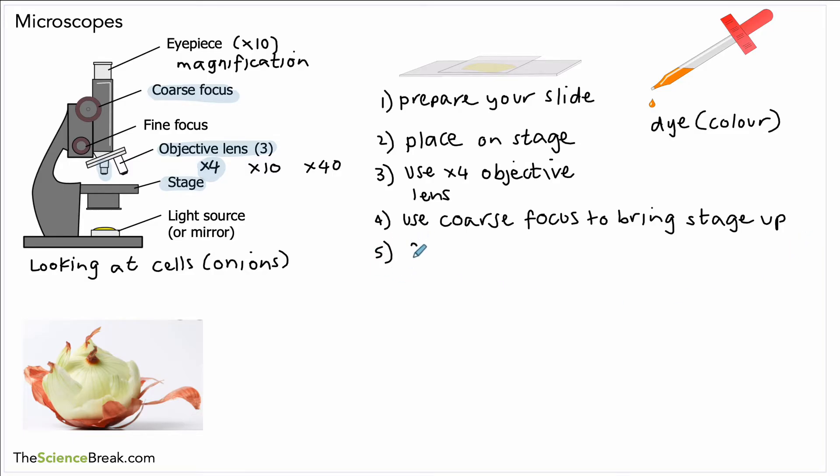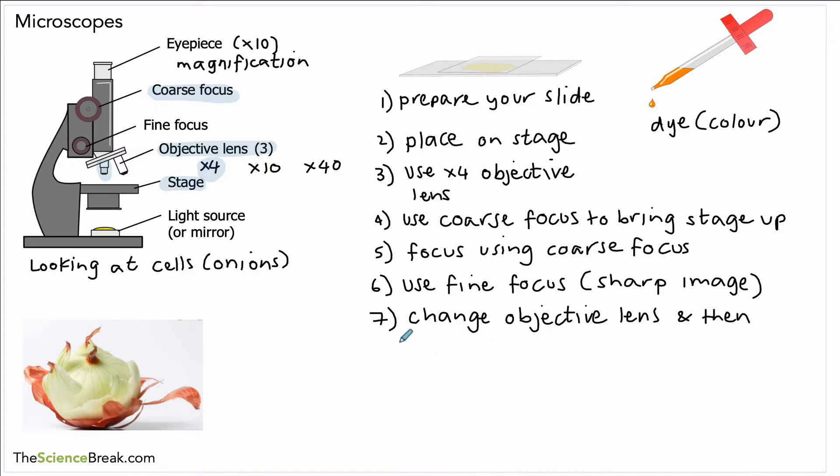Then we very carefully focus on our image again using the coarse focus. The coarse focus moves the stage quite quickly. Once we've got an image we can then switch to our fine focus, which moves the stage very slowly, and we can use that to get a very sharp image. If we want more magnification, we can just change the objective lens to one with more magnification and then use the fine focus to get a sharp image.